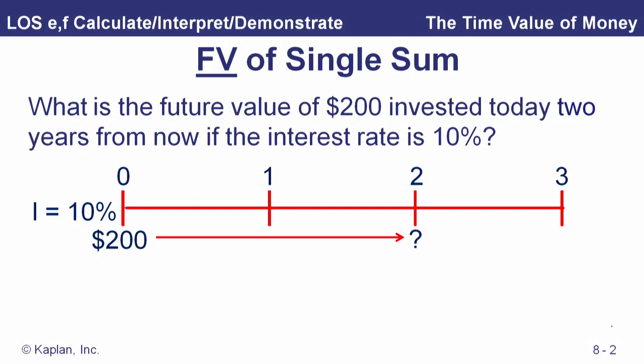The question is: what is the future value of $200 invested two years from now if the interest rate is 10 percent? We're not given any compounding periods and we've only got one number on the page, 10 percent, so we better use that. So what's going to be the future value of that $200 two years from now at 10 percent?